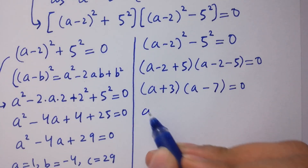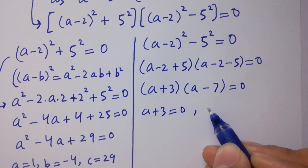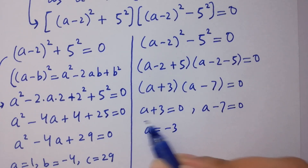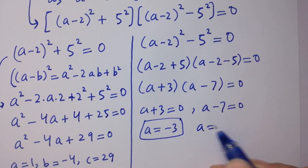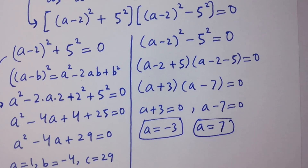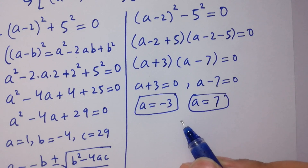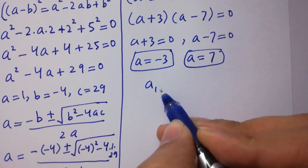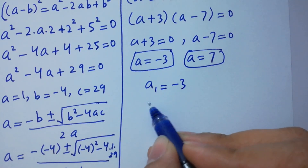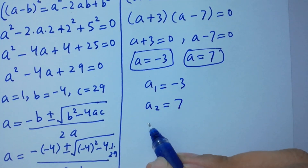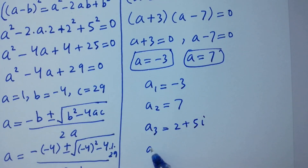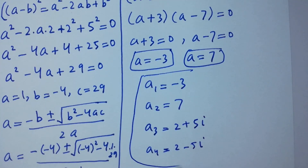Either a plus 3 equals 0 or a minus 7 equals 0, giving a equals minus 3 and a equals 7. These are two real solutions. So in total we have 4 solutions: a₁ equals minus 3, a₂ equals 7, a₃ equals 2 plus 5i, and a₄ equals 2 minus 5i.